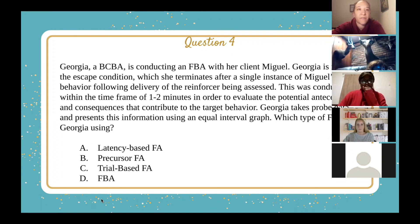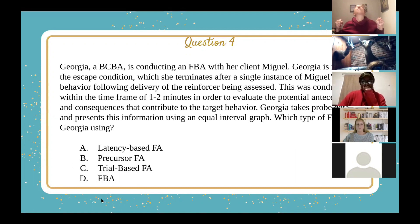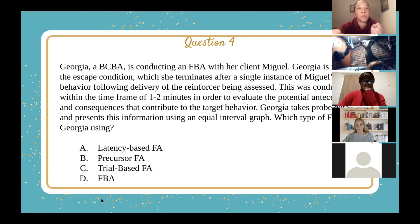A precursor FA looks at the signals a person gives off for things happening just before a behavior occurs. For example, during an observation, you might see warning signs that a child is about to have a meltdown — like clenching fists or looking up in the air — things that happen right before the tantrum tends to occur. A precursor FA looks at what's happening right before a problem behavior occurs in order to find signals and warnings that a behavior is about to happen.